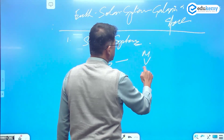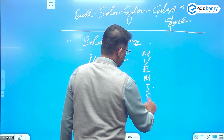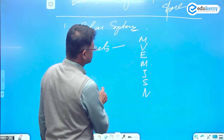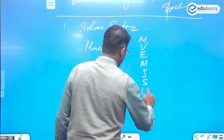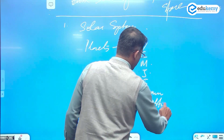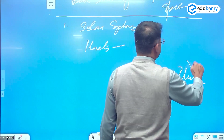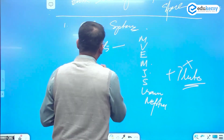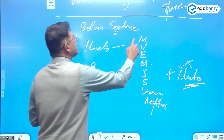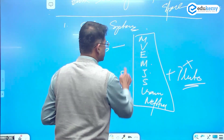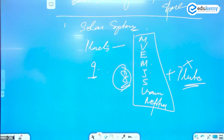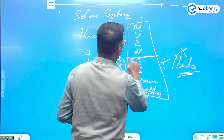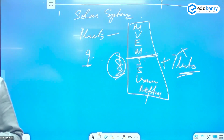How many planets do we have? Mercury, Venus, Earth, Mars, Jupiter, Saturn, Uranus, and Neptune — eight planets. We had Pluto as a planet but now it's considered too small, so we keep it to eight planets.